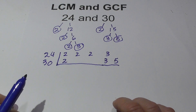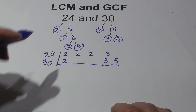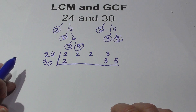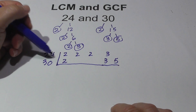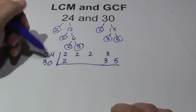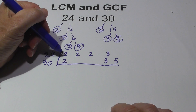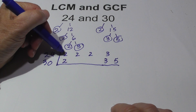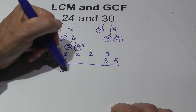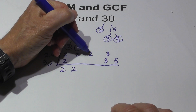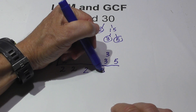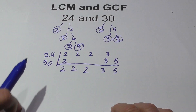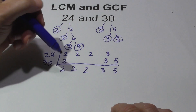For the LCM, I basically multiply these numbers together. But if I have the same number in both 24 and 30, I only multiply it once. So I've got 2 twos here, so I'm going to bring down one 2. Bring down the 2, the 2, only bring down one 3, and the 5. Then I multiply these together.